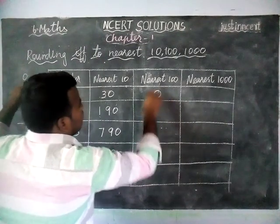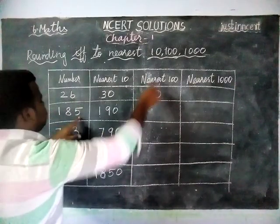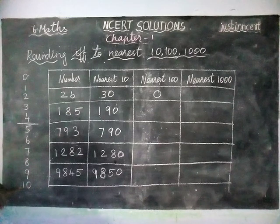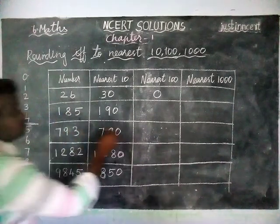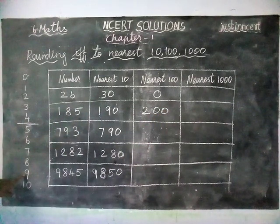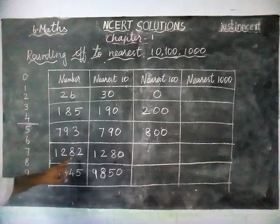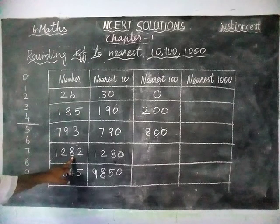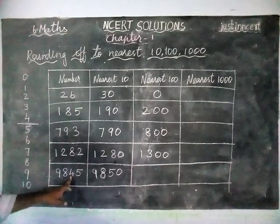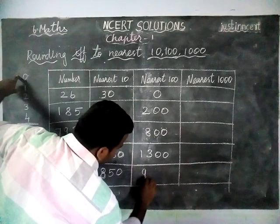When rounding off 26 to nearest 100, it becomes 0. For 185, the tens place is 8. Since 8 is in the 5–9 range, we choose the next 100, which is 200. For 793, the tens place is 9, so the next rounded off number is 800. For 1282, the tens place is 8, so rounding off to nearest 100 gives 1300. For 9845, the tens place is 4, which falls in the 1–4 range, so we choose the previous 100, which is 9800.